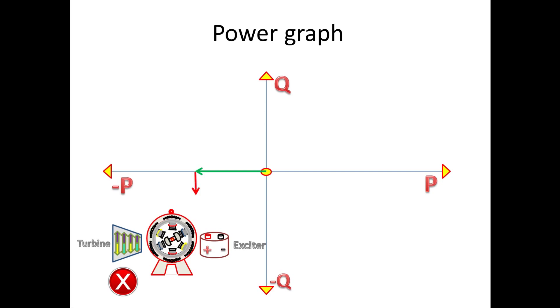So it takes VAR from the grid. Due to this, Q is also minus. So both P and Q are minus. This combination comes under third quadrant.